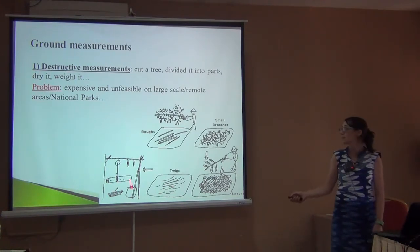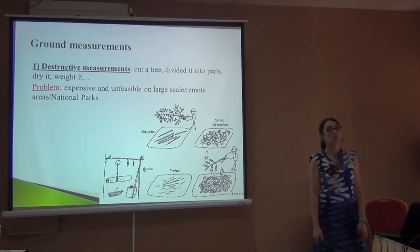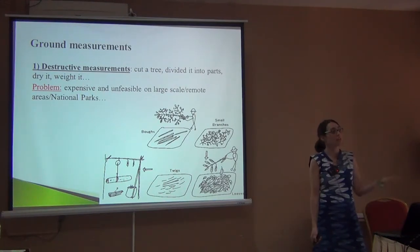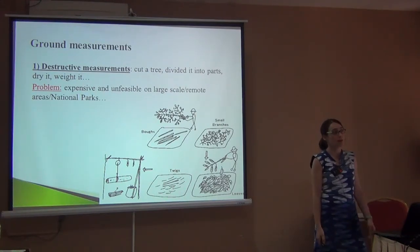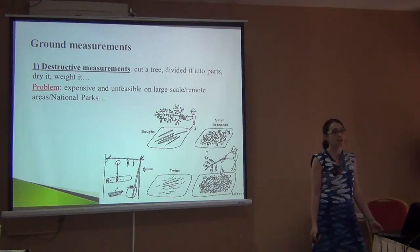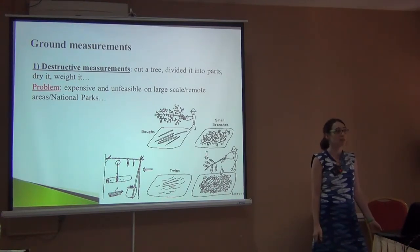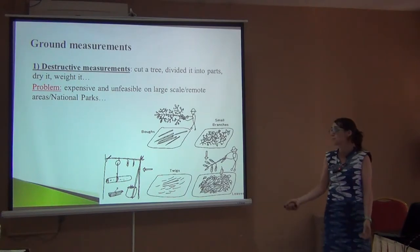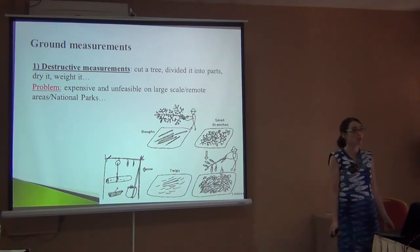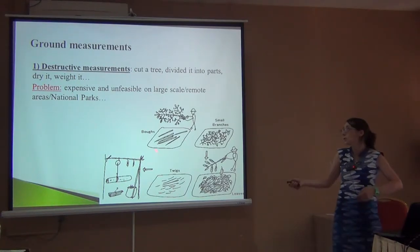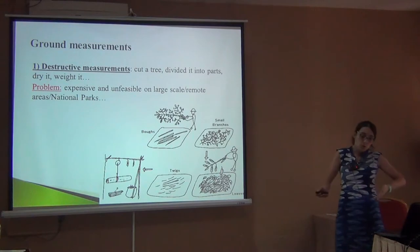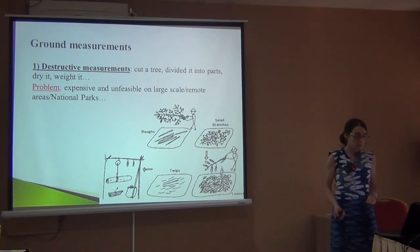It's very expensive, and obviously if you work in a national park you can't chop your trees first — then it doesn't look very good for a scientist. And anyway, which carbon will you sell if you've chopped the trees? So destructive sampling is valid but it's not feasible all the time.